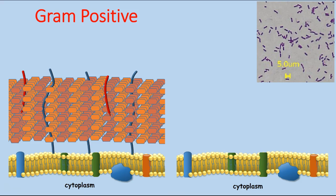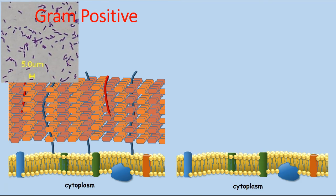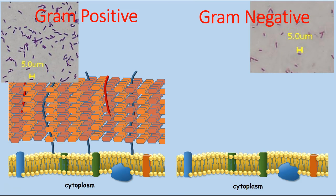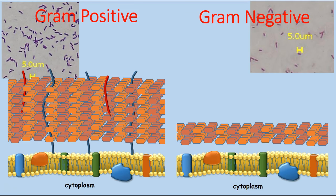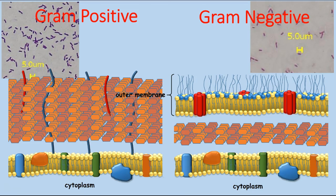While all bacteria with a gram-positive cell wall stain purple, shown here on the left, a few will stain pink or red — these are called gram-negatives. These bacterial cell walls have a very thin peptidoglycan layer, just 7 to 8 nanometers thick compared to that of the gram-positive peptidoglycan layer, which is 20 to 80 nanometers thick. On the exterior side of this thin peptidoglycan layer, gram-negative bacteria have an outer membrane layer.